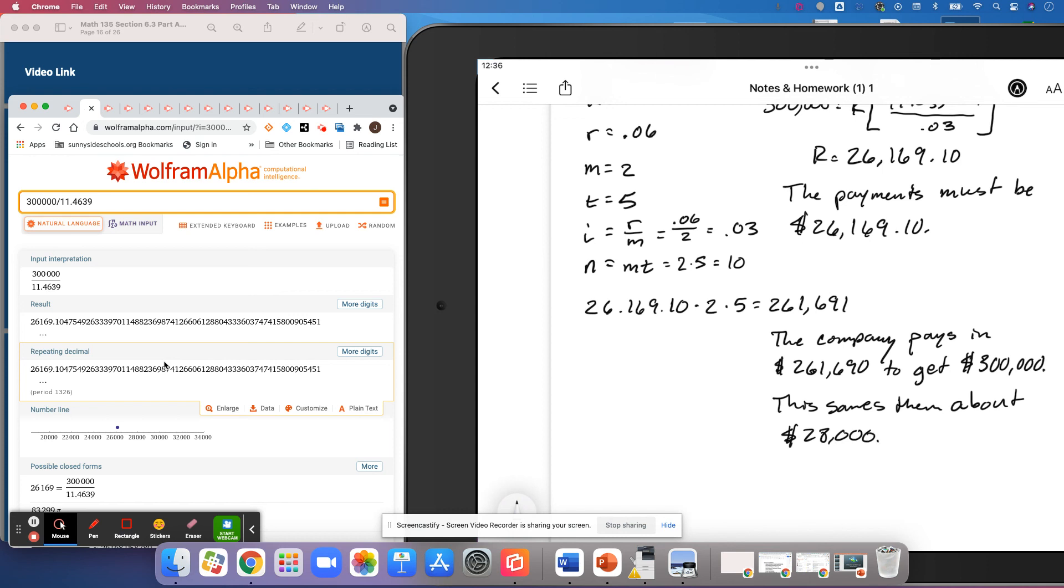So knowing that the bill was coming, preparing for it by putting money in the investment for five years, ends up saving this company just over $28,000 bucks. So that was definitely a good idea.